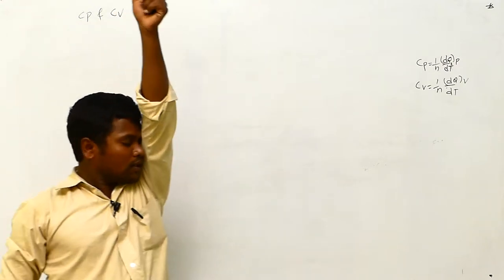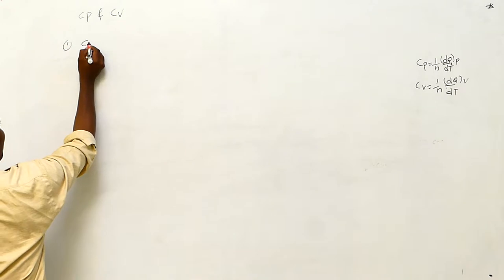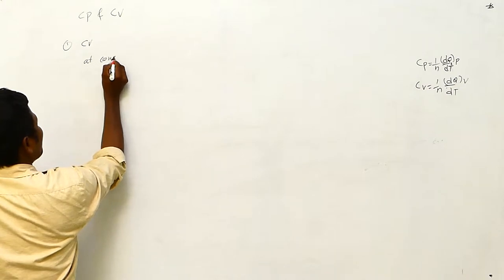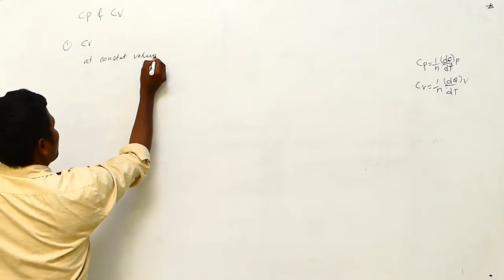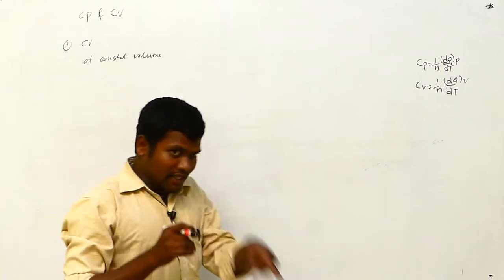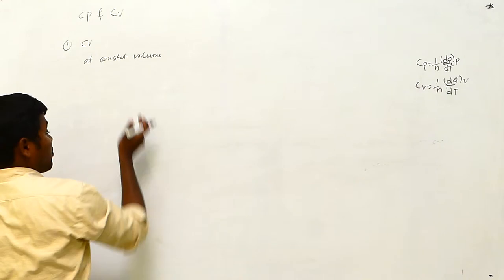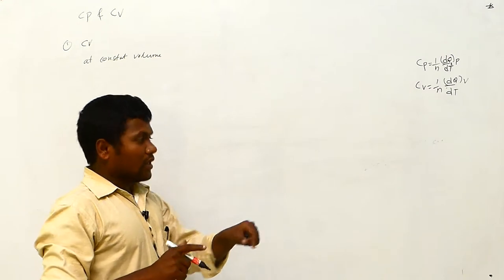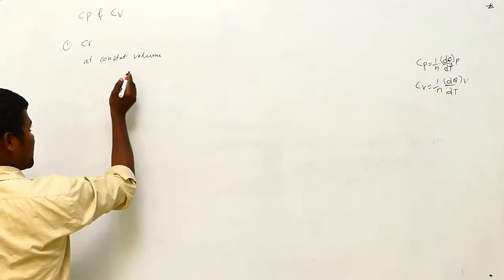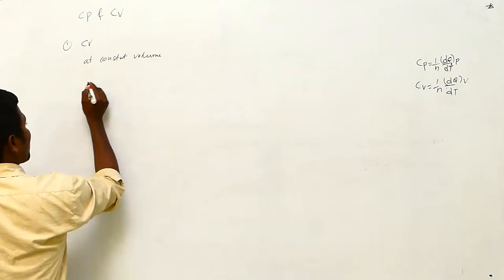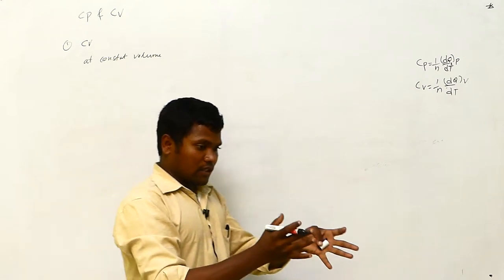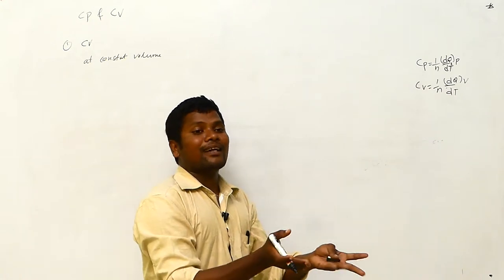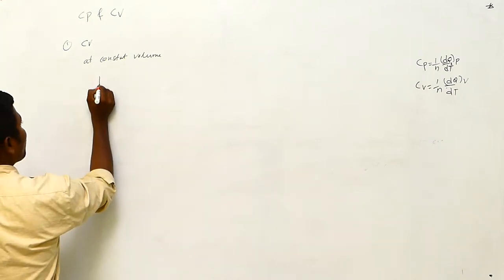We'll first talk about Cv. What is Cv? Specific heat at constant volume. If you supply energy to the system, it is used as internal energy. So what happens: dQ equals dU. This is equation number one.